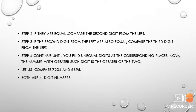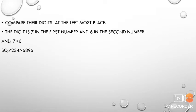Let us make it more clear with an example. Let us compare 7,234 and 6,895. Both are four-digit numbers. The digit at the leftmost place is 7 in the first number and 6 in the second number, and 7 is greater than 6. So, 7,234 is greater than 6,895.